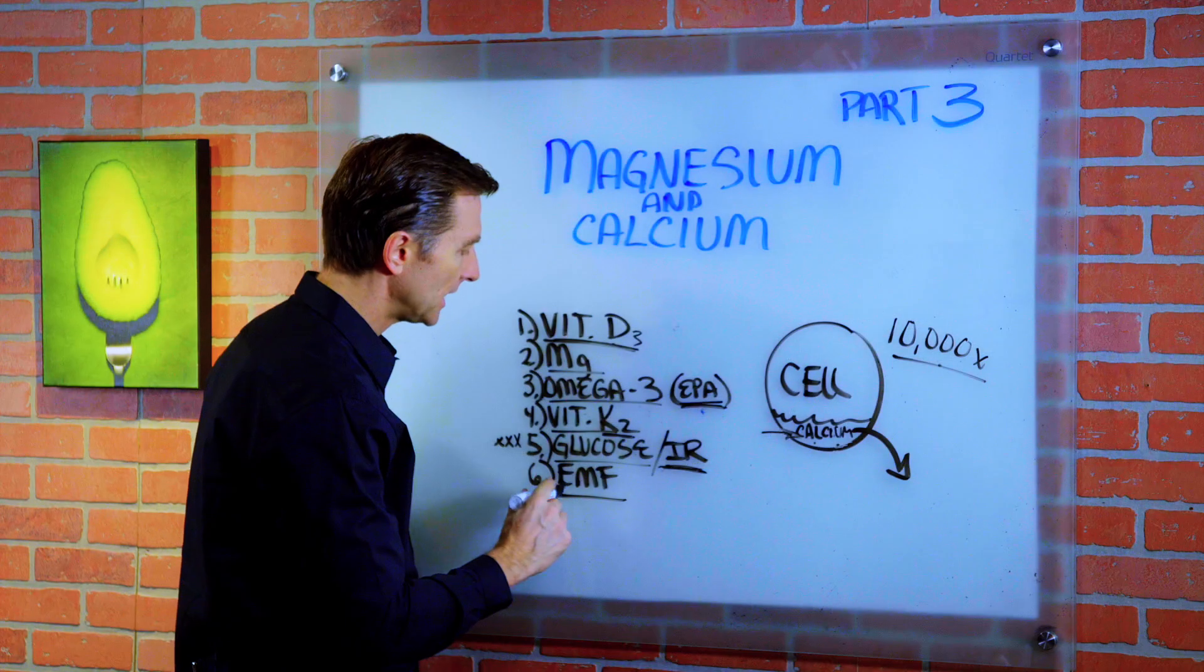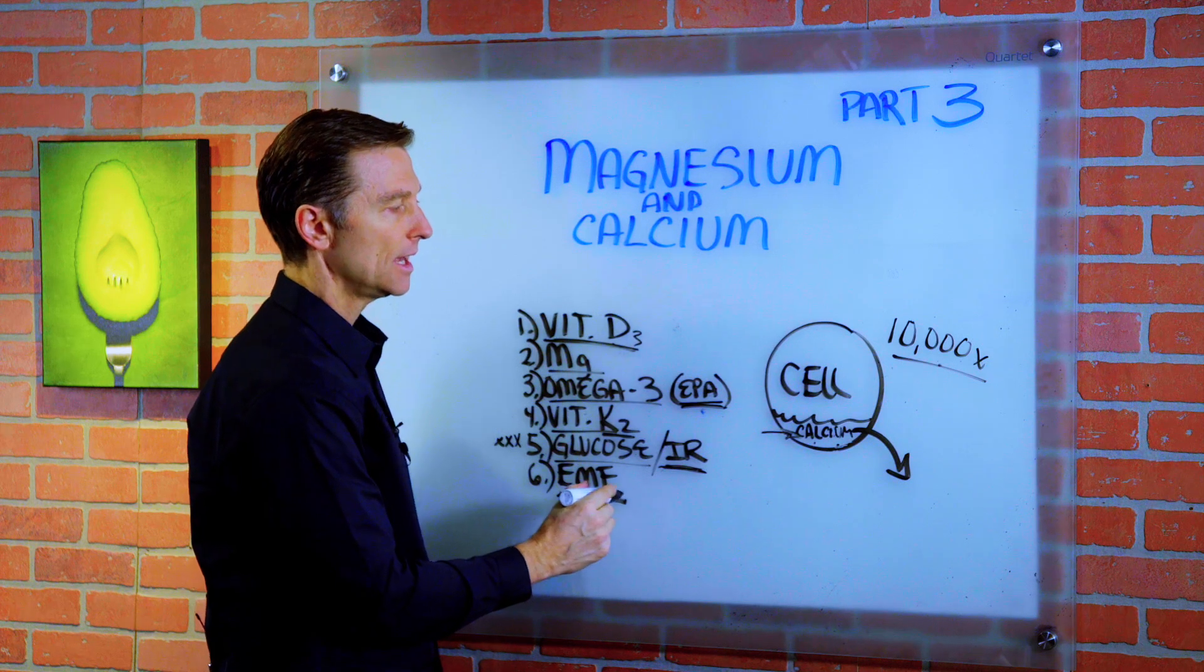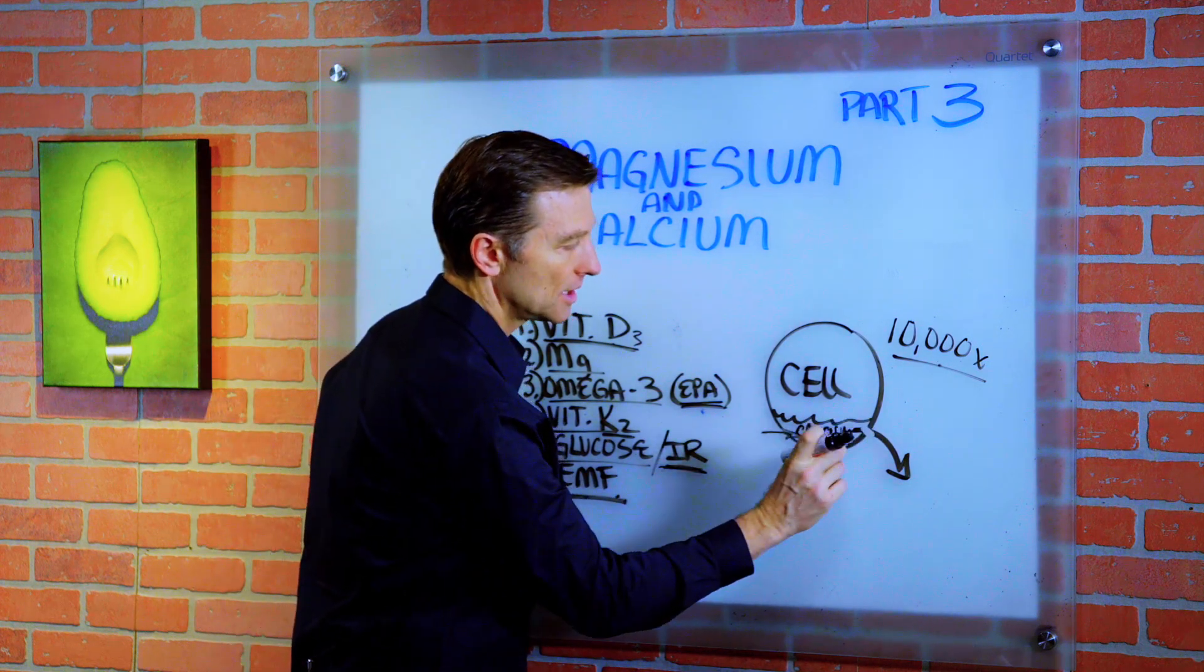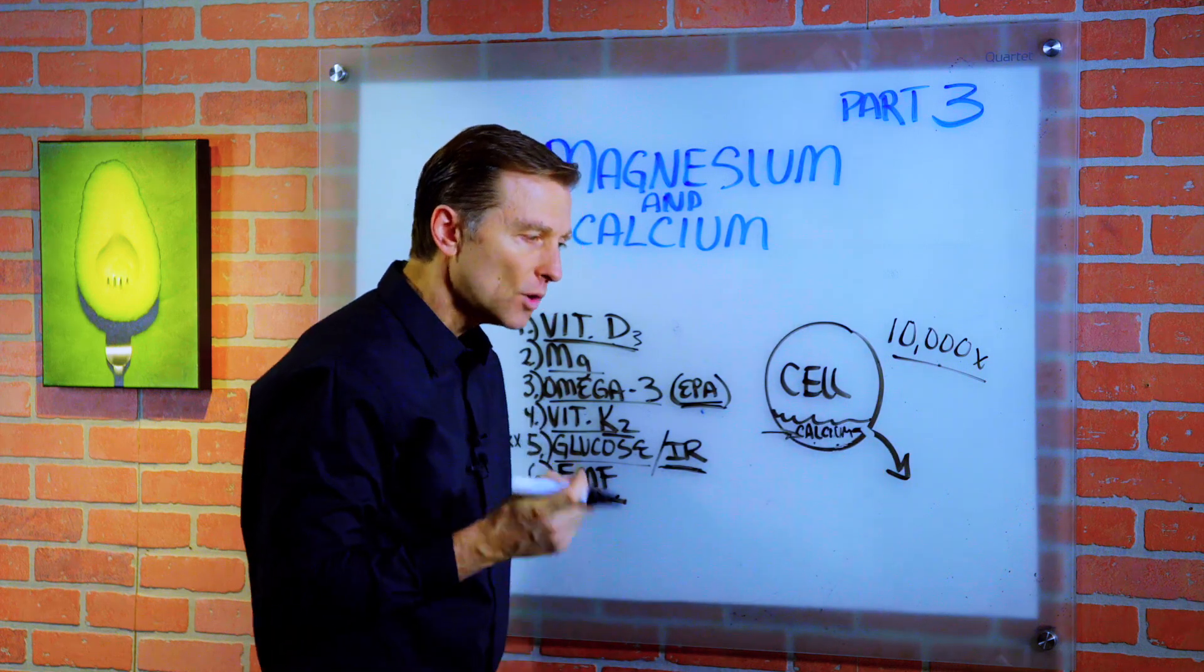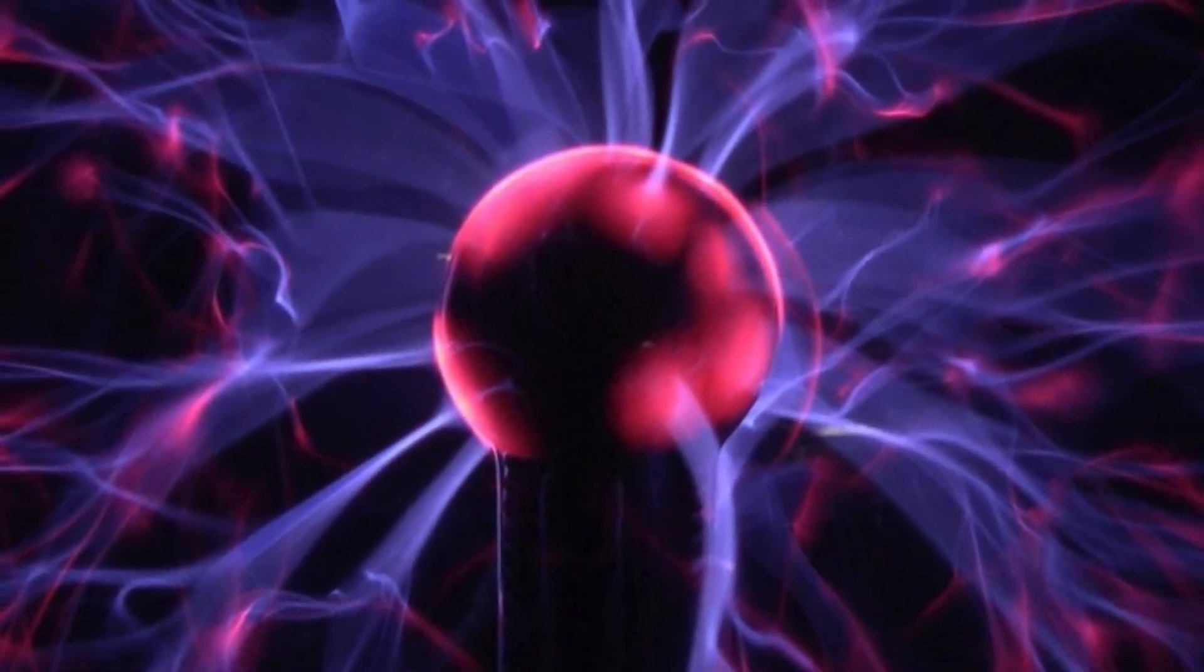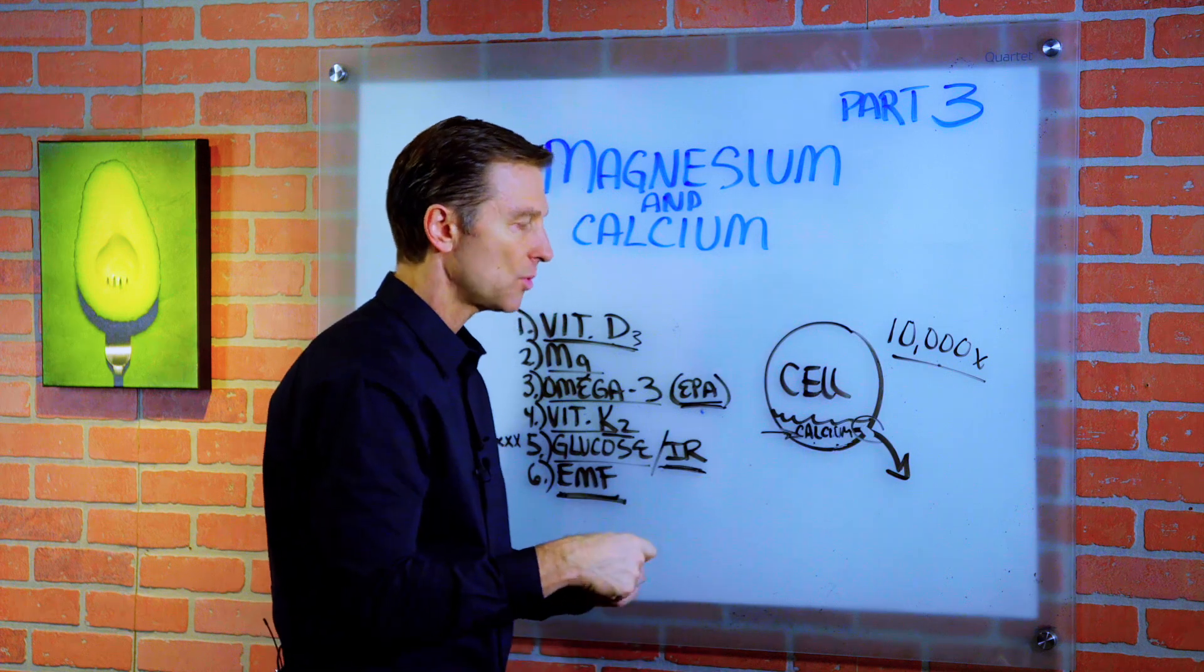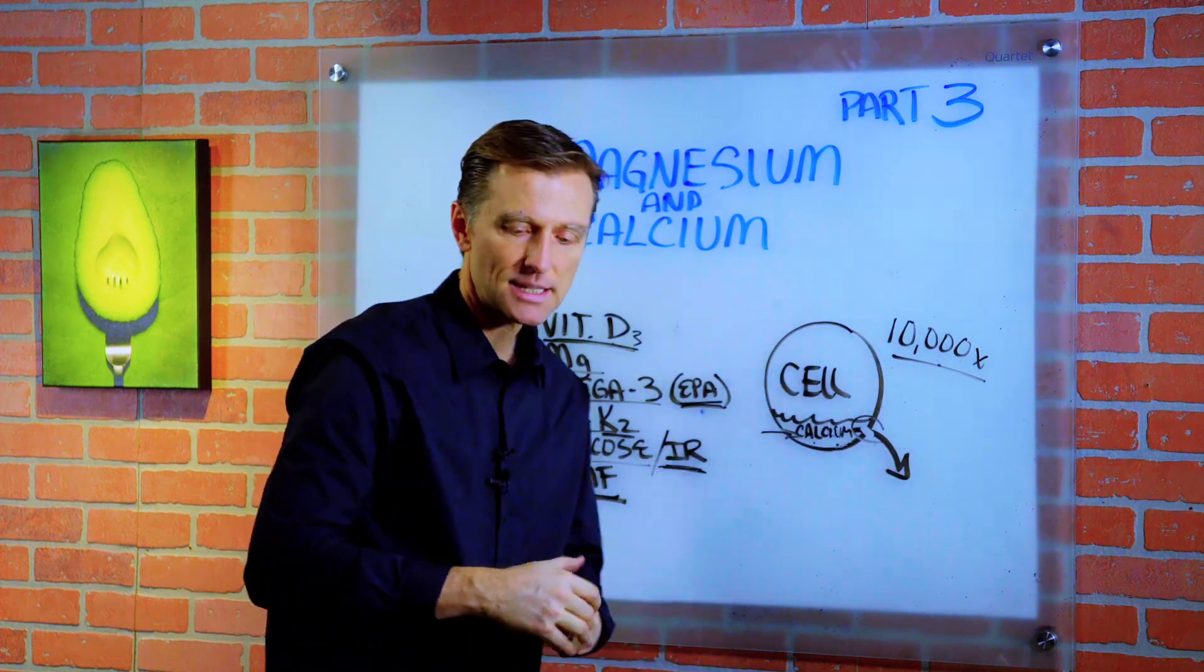And lastly, something called EMF, electromagnetic fields. Now the channel, the door, which opens outside the cell for calcium to leave is called a voltage-gated calcium channel. So there's electrical things going on and EMF interferes with this channel to the point where the calcium won't leave. The calcium will get stuck inside the cell.